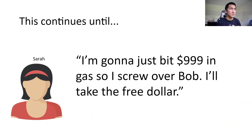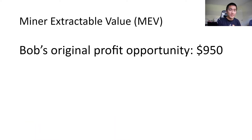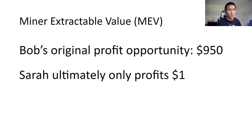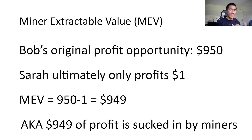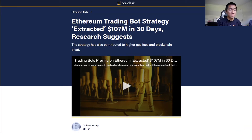In this scenario, Sarah just bids $999 and takes the free dollar. So MEV here: Bob's original profit opportunity was $950, but Sarah only profits $1. MEV right here is $949 — $949 of the profit was sucked in by the miners and lost by the market participants. This is happening every single day on Ethereum. These trading bots trying to arbitrage opportunities everywhere extracted $100 million in 30 days.